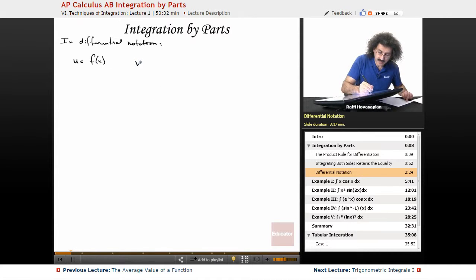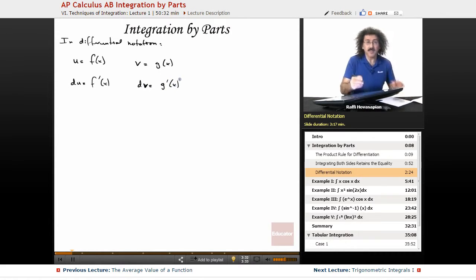U is our f of x, v is our g of x, du is our f prime of x, and dv is our g prime of x, based on what we just wrote in the previous thing.